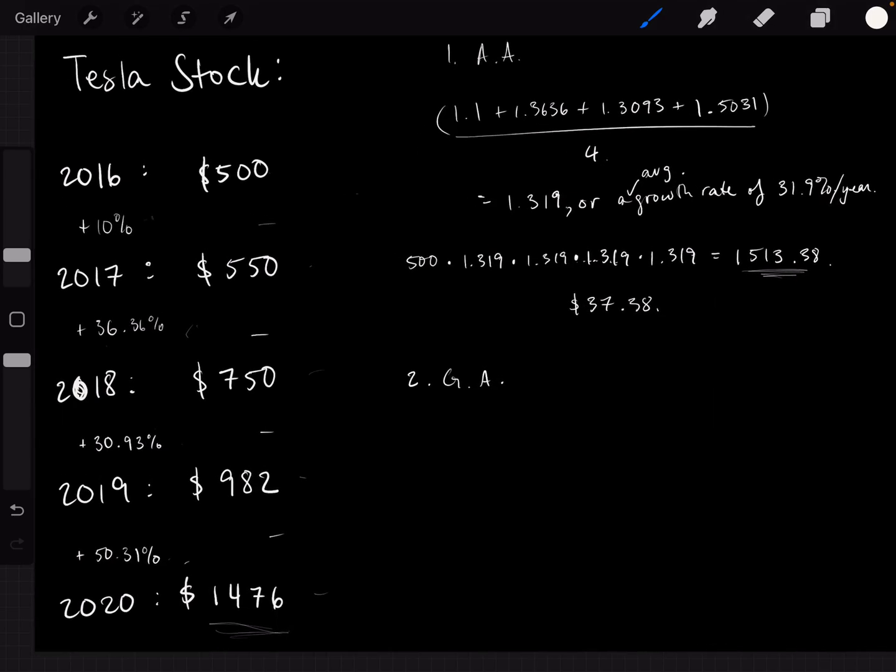So the way that you calculate the geometric average is instead of adding the terms like you do in the arithmetic average, you actually multiply them. And then you raise it to the power of the number of terms you have, or you root it by the number of terms you have. So in this case, we have 1.01 times 1.3636 times 1.3093 times 1.5031. So then you multiply those things.